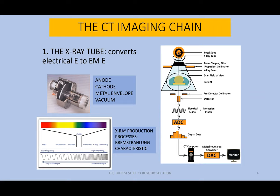The four major components include the anode, which is the positive terminal; the cathode, the negative terminal; the metal envelope, which used to be Pyrex; and then there's the vacuum, which is a very important part of the structure of the X-ray tube.